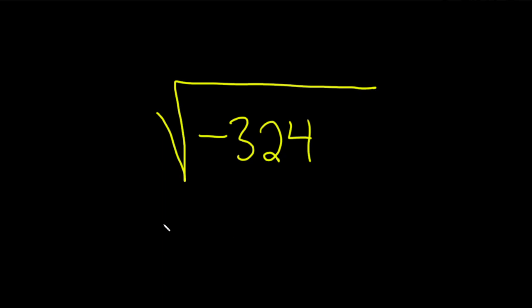In this video, we're going to simplify the square root of negative 324. So to do this, the first thing we're going to do is deal with the negative sign inside the square root.